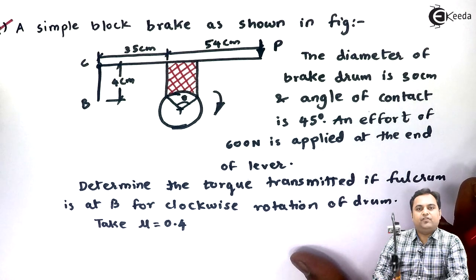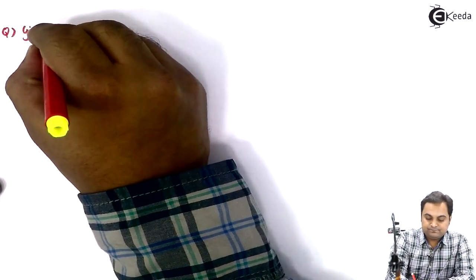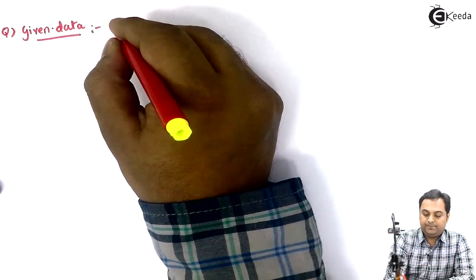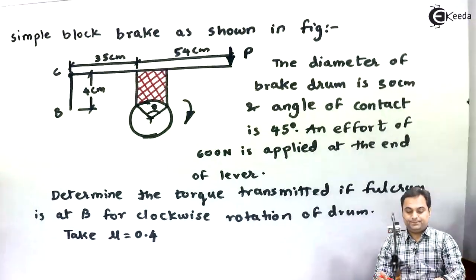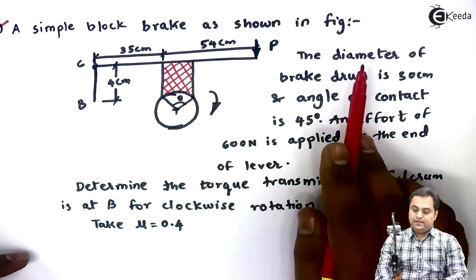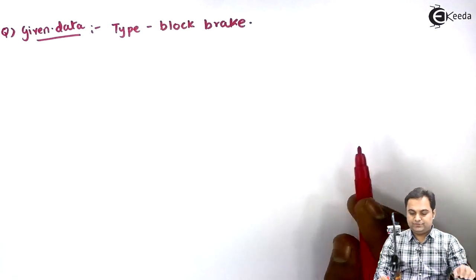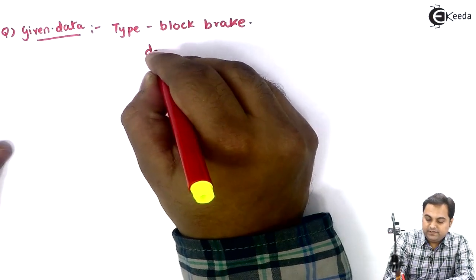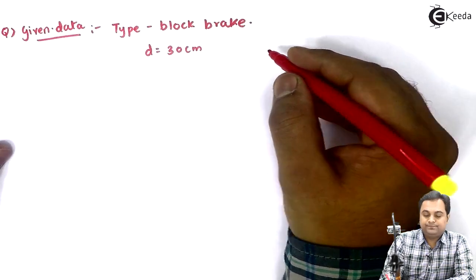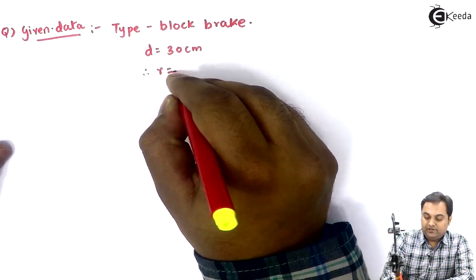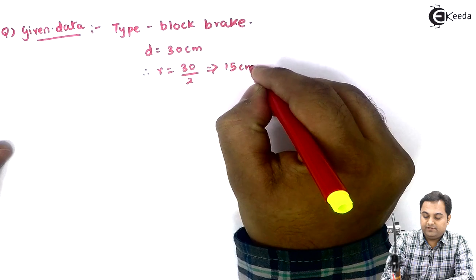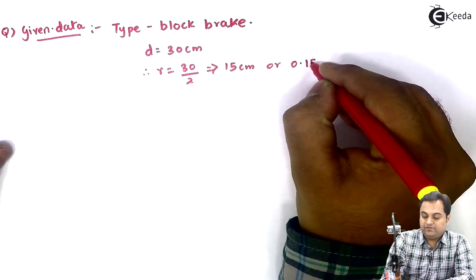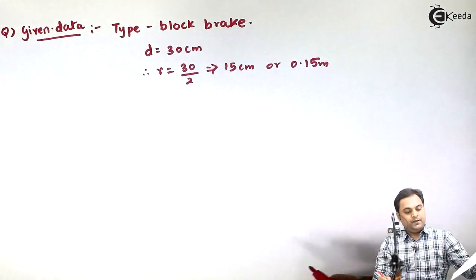We will start this problem by writing the data. The type of brake here is a block brake. The diameter of the brake drum is 30 centimeters, so d = 30 cm. Therefore the radius of the brake drum is half of the diameter, which comes out to be 15 centimeters or 0.15 meters.